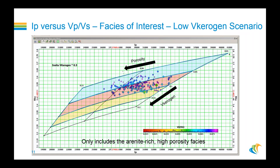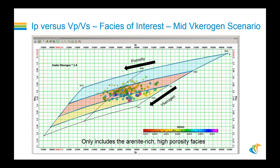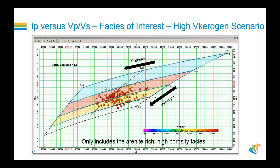Let's look at different scenarios on the P-impedance density cross-plot. This is the arenite-rich high-porosity facies — a preferred lithofacies type — under a low v-kerogen scenario. We can see where those points fall. Moving to the in-situ or mid-kerogen scenario, they have shifted in the direction of increasing v-kerogen, as indicated by the template. And then in the high kerogen scenario, they again move in the direction of the increase in v-kerogen.